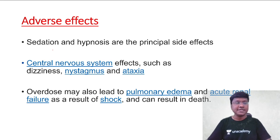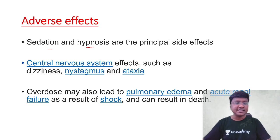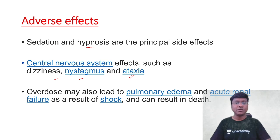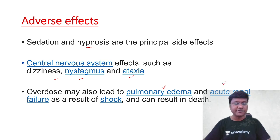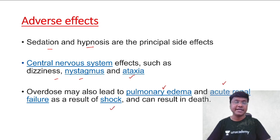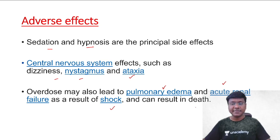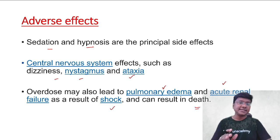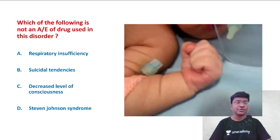The adverse effects of phenobarbitone include sedation, hypnosis, and CNS effects like dizziness, nystagmus, and ataxia. Overdose may also lead to pulmonary edema, acute renal failure, respiratory insufficiency, and shock; in extreme cases it can be fatal.